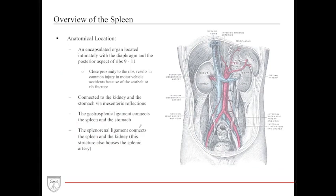The spleen is located intimately with ribs 9 through 11. A helpful mnemonic: 9-11 equals emergency — if you have an injury to ribs 9 through 11, the spleen can bleed out. In abdominal trauma such as a car accident or seatbelt injury, a ruptured spleen can spill a large amount of blood into the abdominal cavity, causing hemodynamic instability.